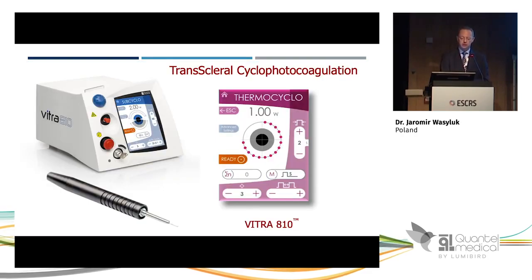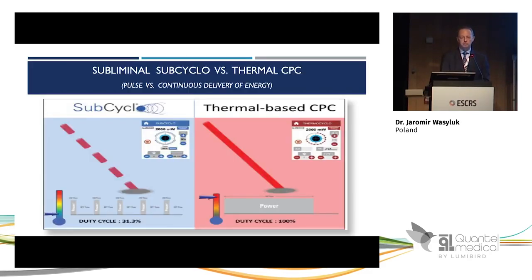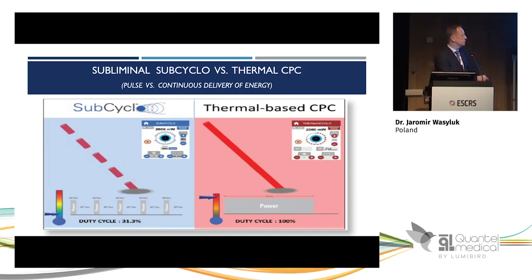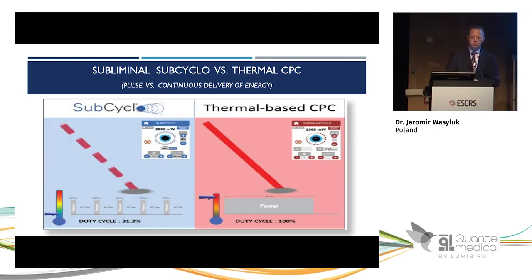Some complications may be transient, but some are very serious and potentially permanent, including visual acuity decrease and even loss of the eye. A new and very promising method has been developed — it's called sub-threshold cyclophotocoagulation (SubCycle) and can be performed by the same machine. The key difference is that in SubCycle the laser beam is divided and fractionated into small shots; between these shots there are gaps during which the tissue has enough time to cool down.